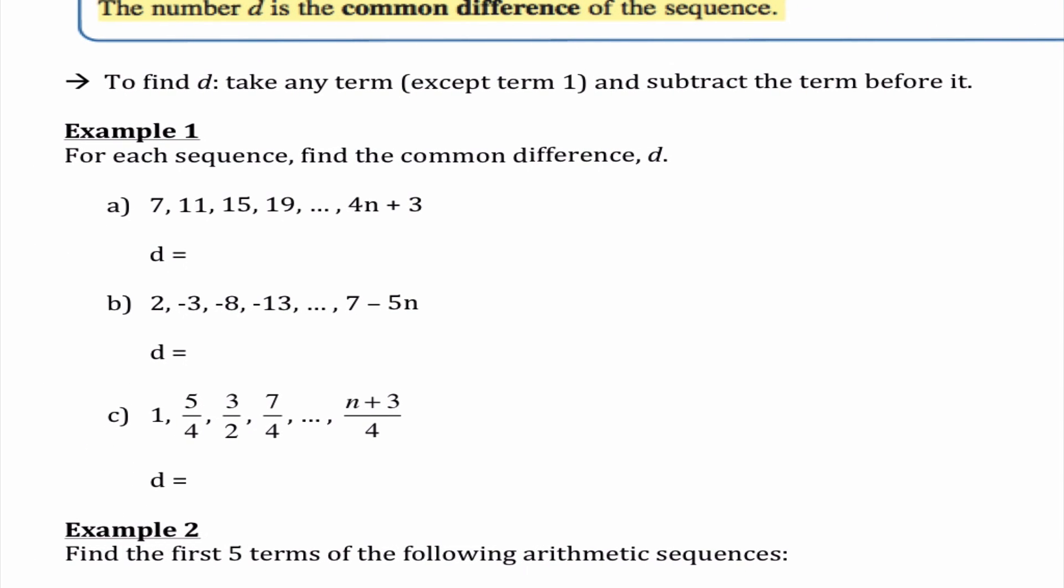For these problems we need to determine what is our common difference. First I need to make sure it's arithmetic. It looks like we are adding the same number each time. If I take 11 and subtract the previous number, I would get 4. Notice 7 plus 4 is 11, 11 plus 4 is 15, 15 plus 4 is 19. We can guess our next number would be 23 and then 27.